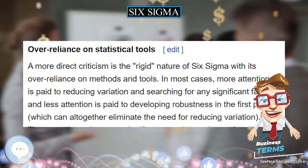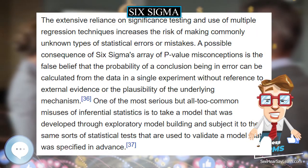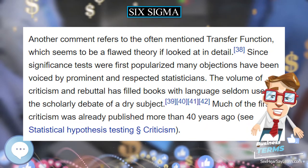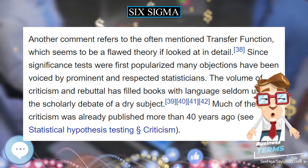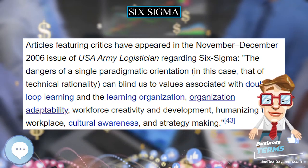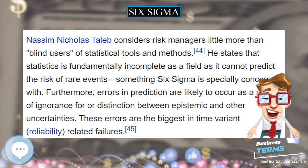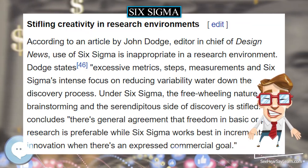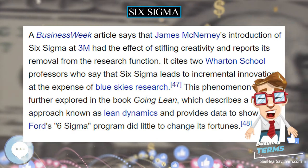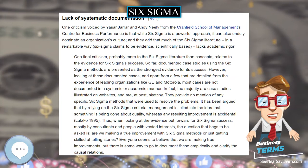Six Sigma projects follow two project methodologies inspired by Deming's Plan-Do-Study-Act cycle. These methodologies, composed of five phases each, bear the acronyms DMAIC and DMADV. The DMAIC project methodology has five phases; some organizations add a recognized step at the beginning to recognize the right problem to work on. The DMADV project methodology, known as DFSS (Design for Six Sigma), also features five phases.